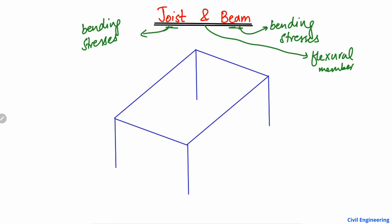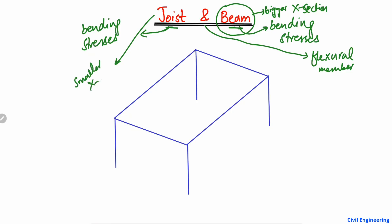Flexural member means they can take flexural stresses or bending stresses. But where is the difference between them? The main difference is that beams are usually in a bigger cross-section, while joists are mainly in a smaller cross-section.